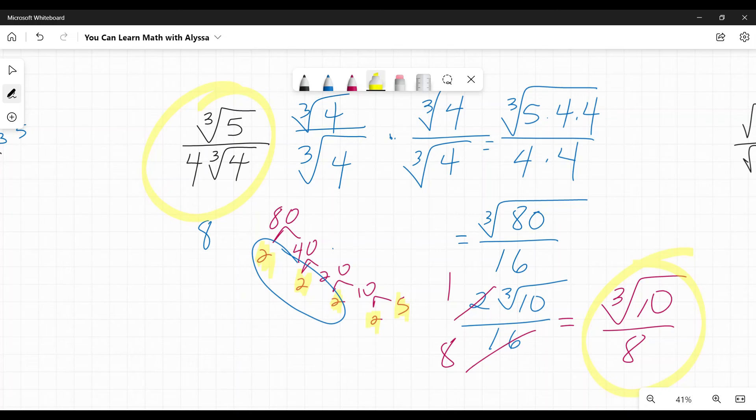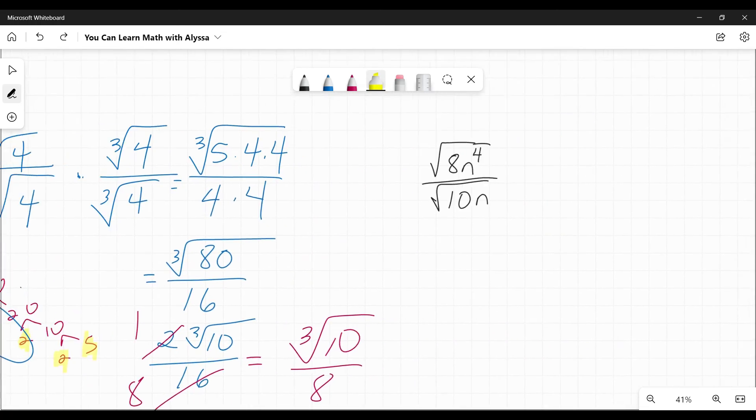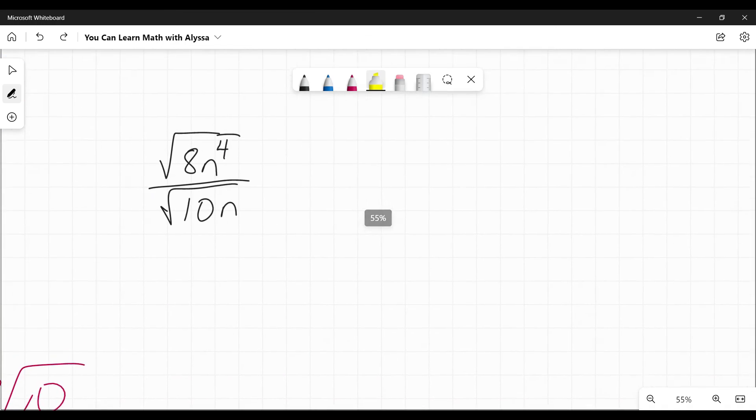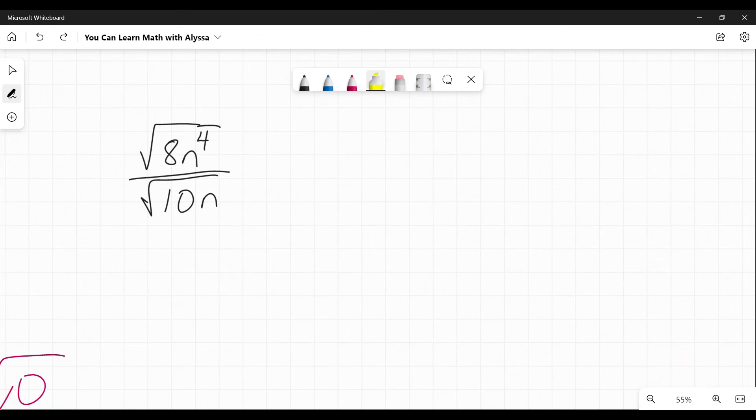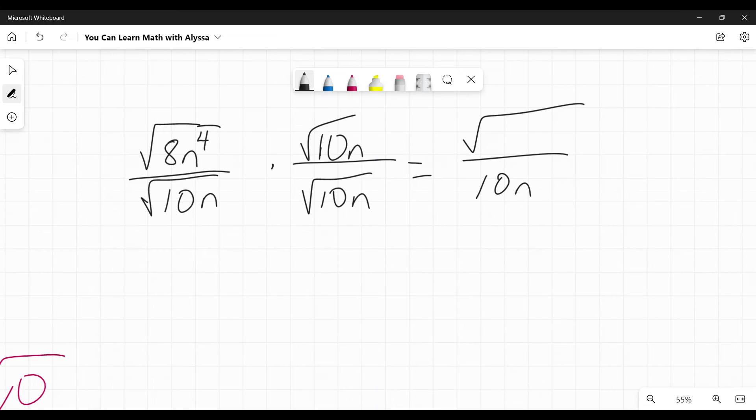And last, but certainly not least, what do you do if there's variables involved? It's the same thing. It's nothing to be worried about. You made it through all those. You can do this just fine. It's the same exact principles. We're going to get rid of that square root on the bottom by multiplying by square root of 10N over square root of 10N. So on the bottom, those cancel out. And I am just left with 10N. On the top, they get combined. Eight times 10 is 80 into the fourth times N is N to the fifth.